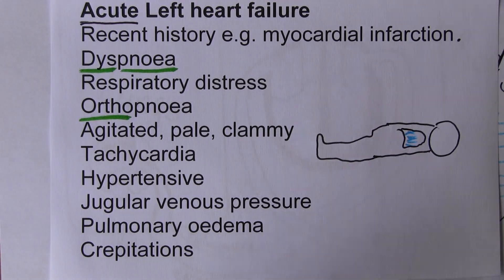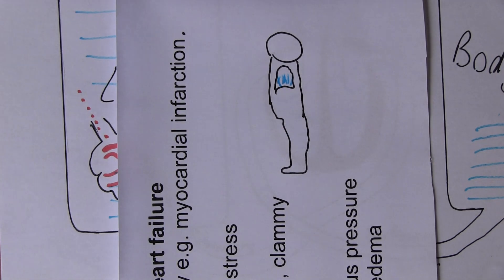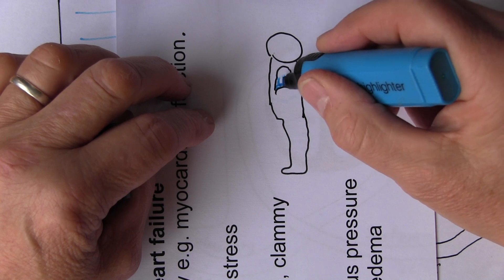When we sit the patient up and the patient's in an upright position, the gravity effect means the fluid accumulates mostly at the bottom of the lungs.